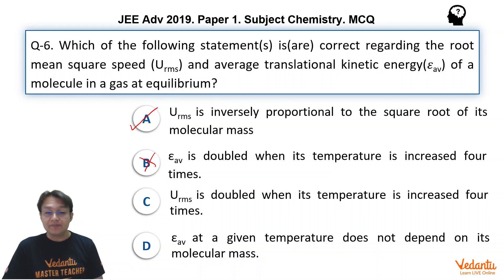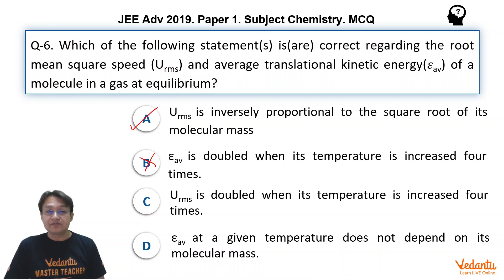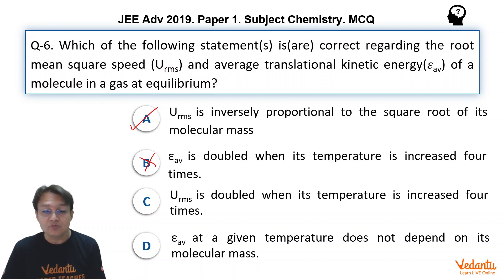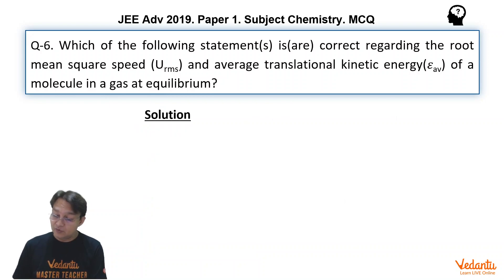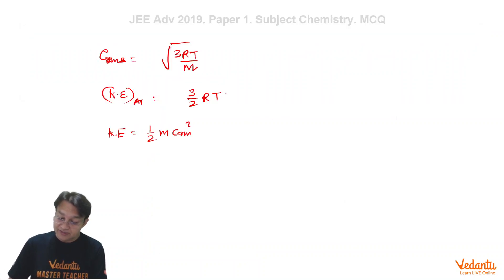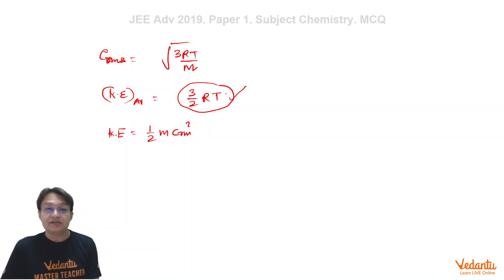The third option is: URMS is doubled when the temperature is increased four times. In the URMS expression, there is an under root of T, so when the temperature is increased four times, URMS is increased two times — this is correct. The fourth option is: E-average at a given temperature does not depend on its molecular mass. This is evident from the relation, as there is no molecular property in the E-average expression, so kinetic energy is independent of the molecular mass — also correct.